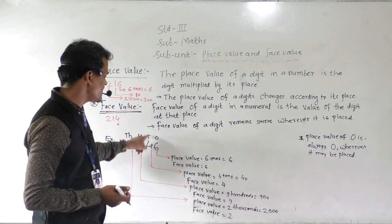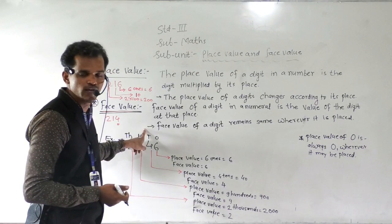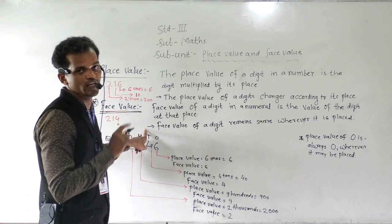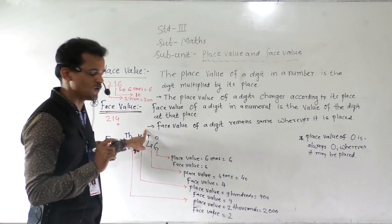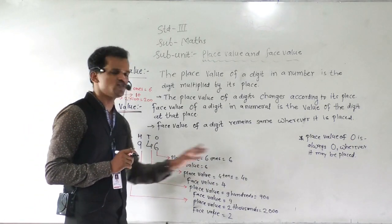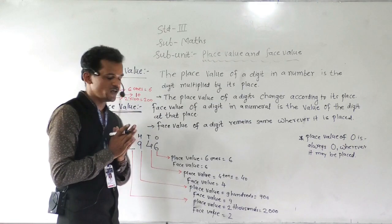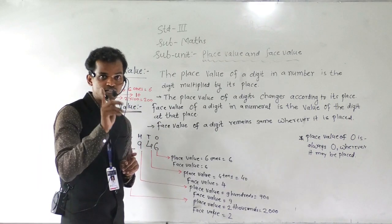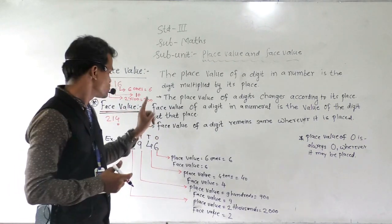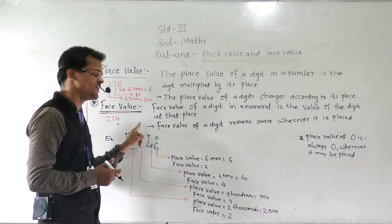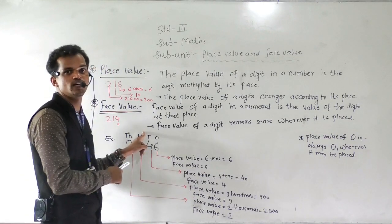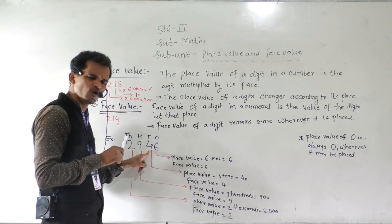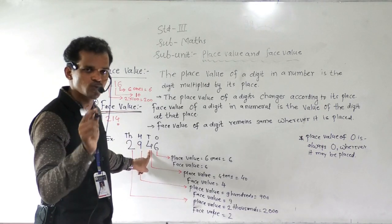Then 2 comes at the tens place. So what is the place value of this 2? 2 comes at tens place, so 2 into 10 equals 20 — that is the place value of this 2. But the face value remains the same — it looks like 2, so face value of this 2 is 2. Place value depends on place, so place value of this 2 is 20.